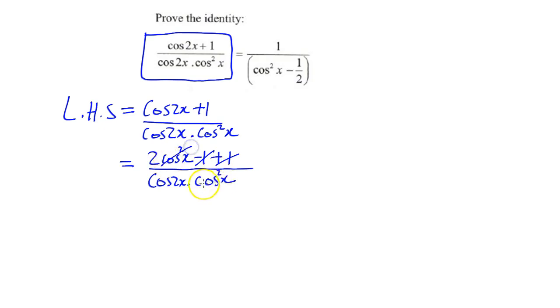So I'm actually now left with 2 over cos 2x.